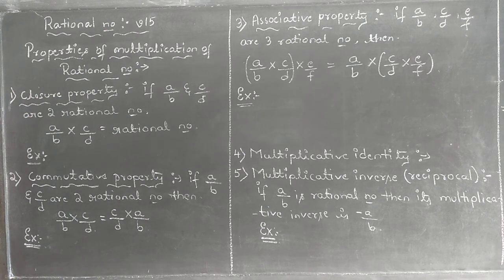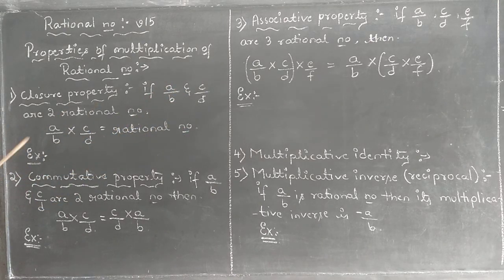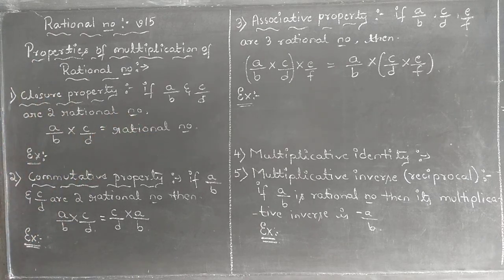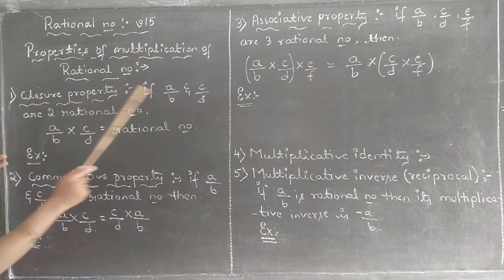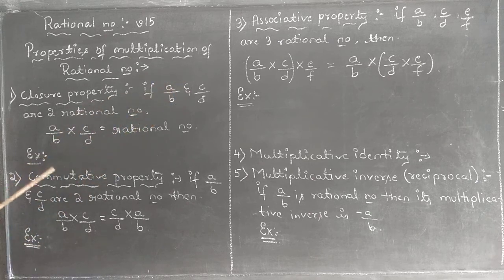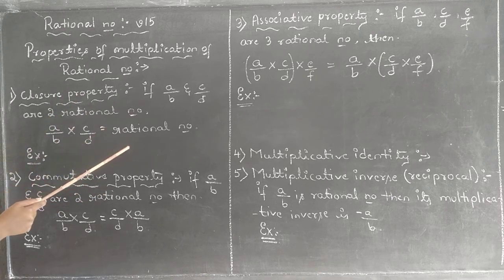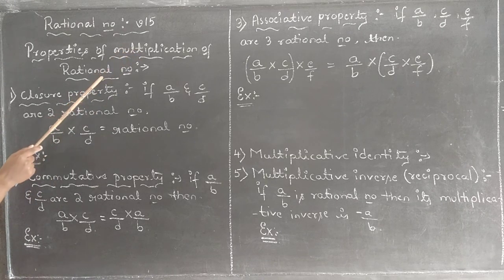Closure property states that if A/B and C/D are two rational numbers, then A/B into C/D should be a rational number. That is called closure property. Just as in addition you get plus and in subtraction you get minus, similarly in multiplication we put 'into'. If we take any two rational numbers and multiply them, the result should again be a rational number. Then we say multiplication of rational numbers satisfies closure property.